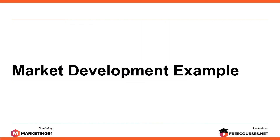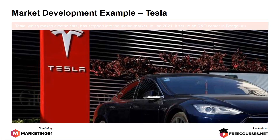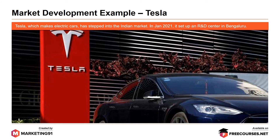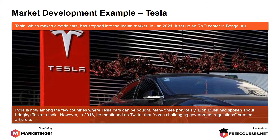Market development examples. First, Tesla. Tesla, which makes electric cars, has stepped into the Indian market. In January 2021, it set up a research and development center in Bengaluru. India is now among the few countries where Tesla cars can be bought. Elon Musk had previously spoken about bringing Tesla to India; however, in 2018, he mentioned on Twitter that some challenging government regulations had created a hurdle.